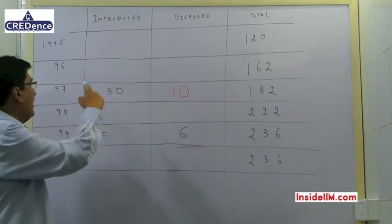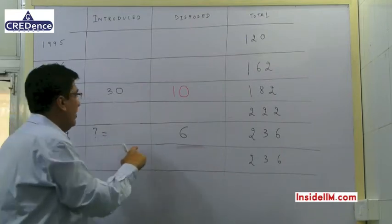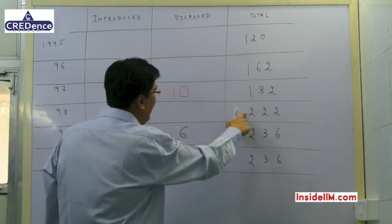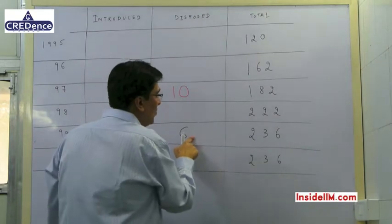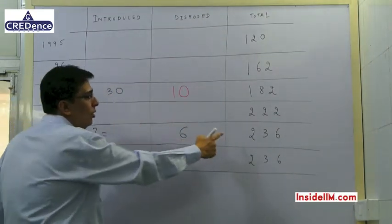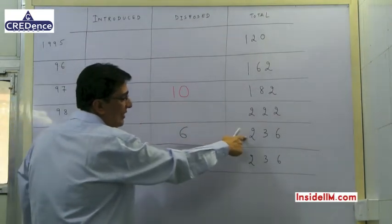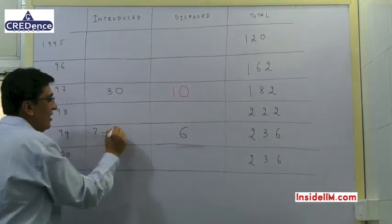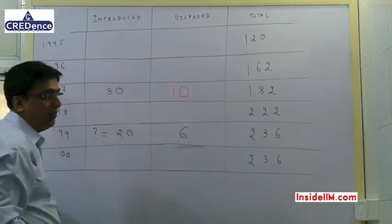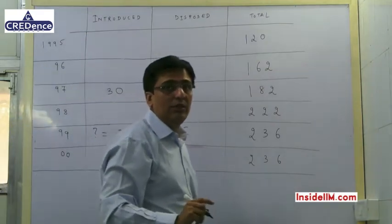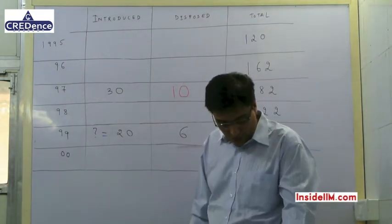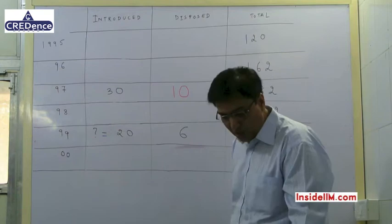Similarly for 1999: 222 − 6 + x = 236, giving x = 20. This also gives us the answer to question 3: 20 Mixture Grinders were manufactured in 1999, which is option 1.